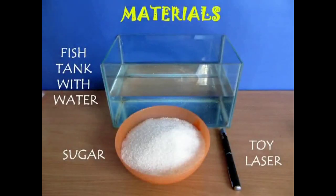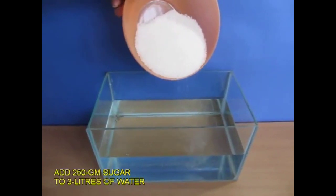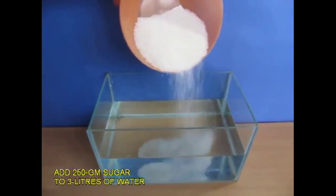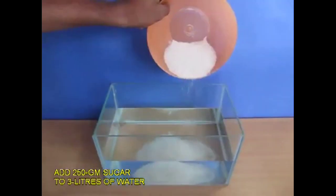Light bends as density increases. You need a fish tank and 250 grams of sugar. Put three liters of water in the fish tank, about half full, and add 250 grams of sugar.